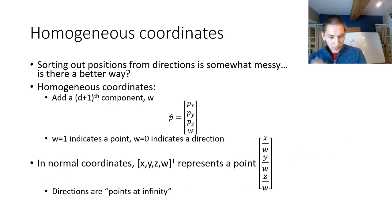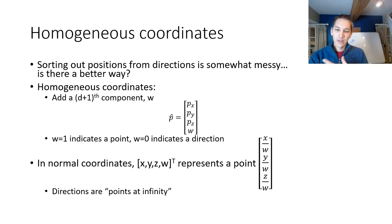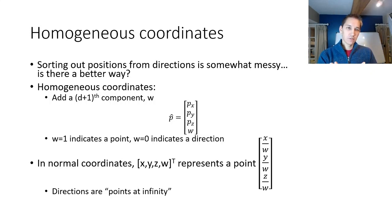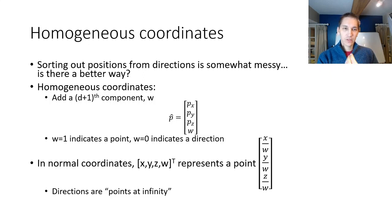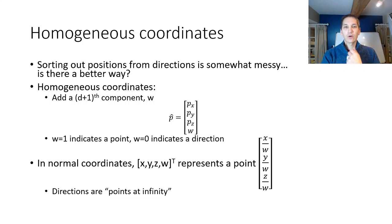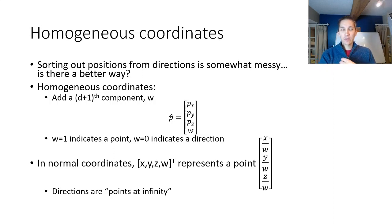It's a bit confusing to think about points and directions working in different ways when applying transforms, so we're going to develop a technology called homogeneous coordinates, which has been around for generations. It allows us to work with rigid transforms in a way that treats them like linear transforms — like matrices. We add an extra coordinate onto the end of each two- or three-dimensional vector, ending up with a D+1 dimensional vector representing our point or direction.